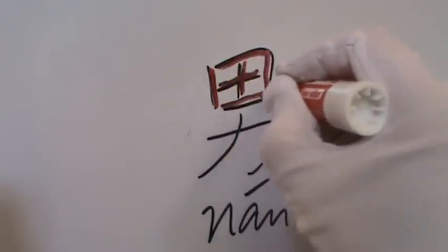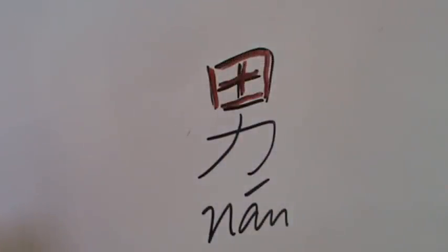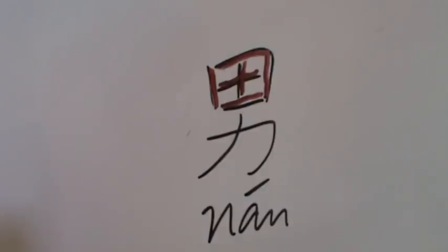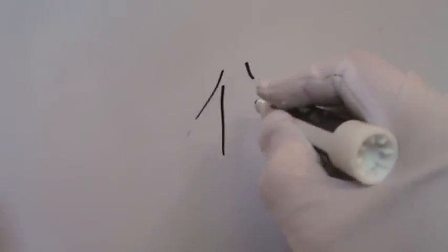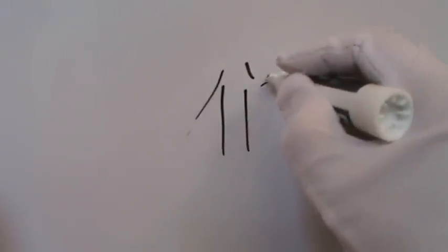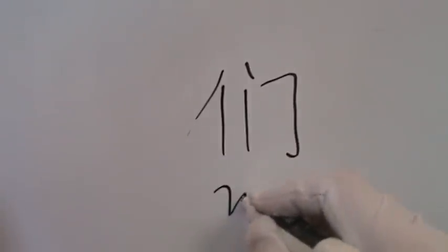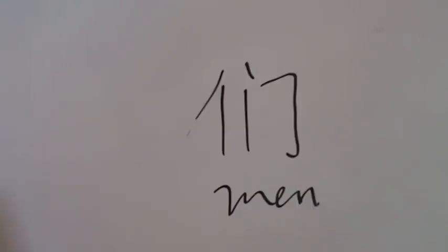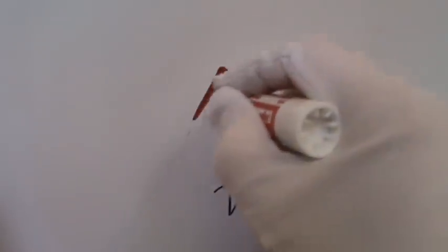And number 29: 们 (Men), written with 5 strokes. Men is usually pronounced in the neutral tone. For example, 你们 (nǐmen) means 'you all', 女们 (women) means 'women'. And the radical is on the right.